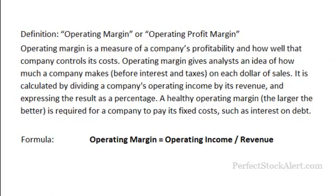Today we're going to be looking at the definition of operating margin, also known as the operating profit margin. As I do in each one of these fundamental analysis tutorial videos, I'll give you the actual definition, then we'll go on to look at an example and give you more insight. Operating margin is a measure of a company's profitability and how well that company controls its costs. It gives analysts an idea of how much a company makes before interest and taxes on each dollar of sales. It is calculated by dividing a company's operating income by its revenue and expressing the result as a percentage. A healthy operating margin — the larger the better — is required for a company to pay its fixed costs, such as interest on debt.